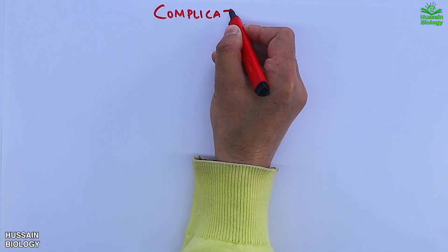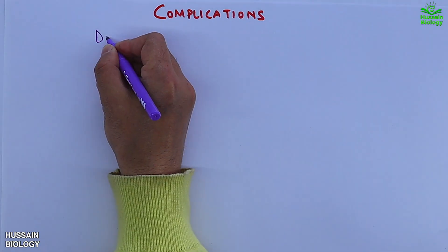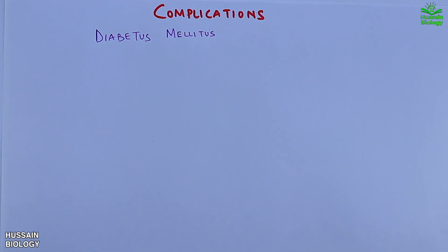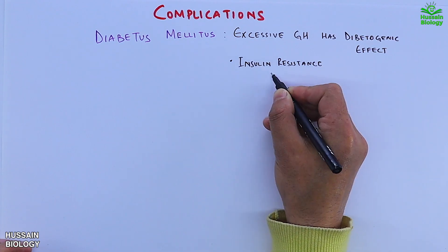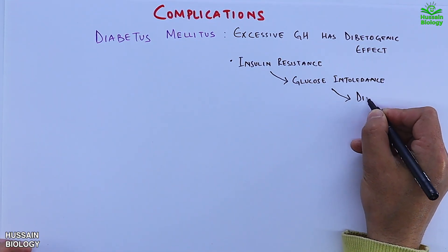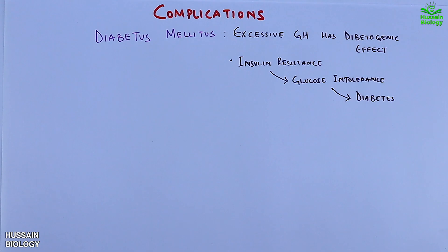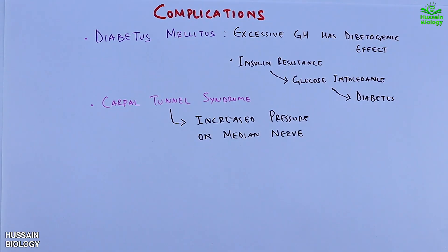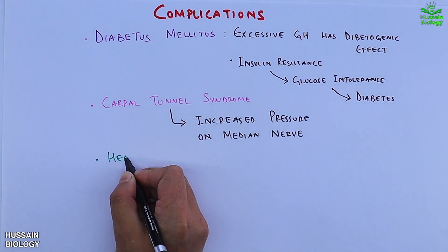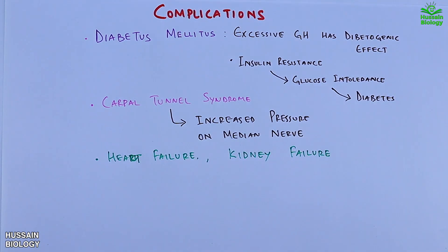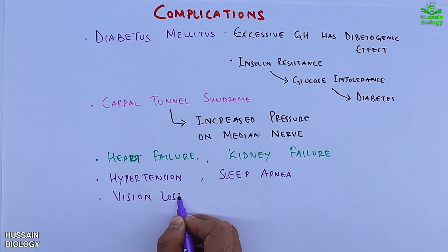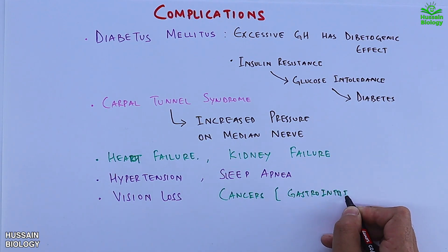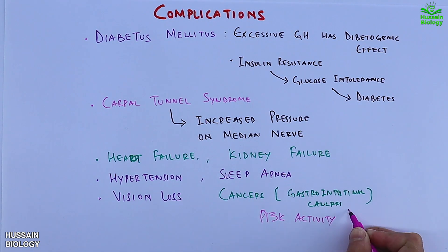Complications of acromegaly include diabetes mellitus, as the excessive growth hormone has a diabetogenic effect causing insulin resistance, glucose intolerance, and then diabetes. The second important complication is carpal tunnel syndrome, where there is increased pressure on the median nerve. Other complications include heart failure due to heart enlargement, kidney failure, hypertension, sleep apnea, vision loss, and gastrointestinal cancers due to increased activity of the PI3K pathway.